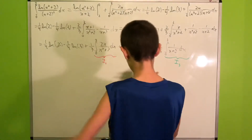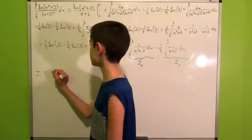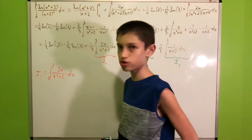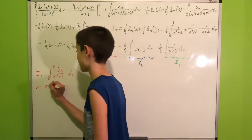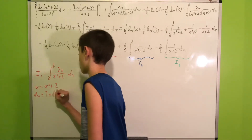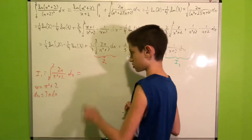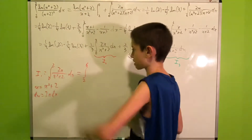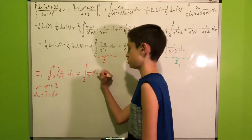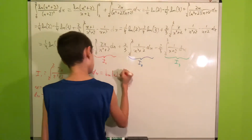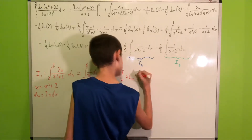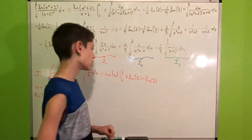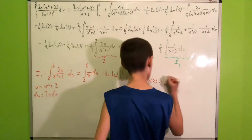For I1, we write it as the integral from 0 to 2 of 2x/(x² + 2) dx. We let u = x² + 2, so du = 2x dx. Plugging in: when x = 0, u = 2; when x = 2, u = 6. So I1 = ∫₂⁶ (1/u) du = ln(u) evaluated from 2 to 6, which is ln(6) − ln(2) = ln(6/2) = ln(3).